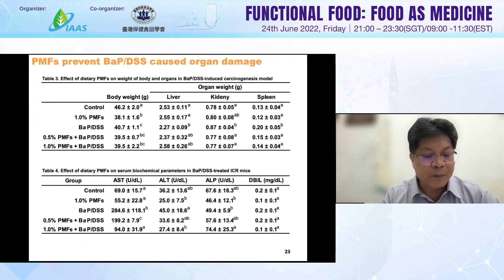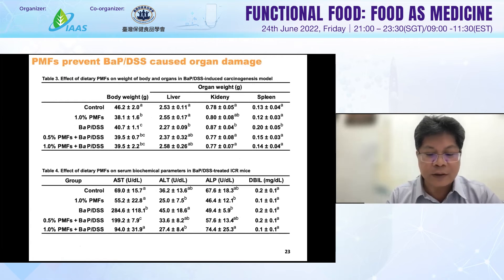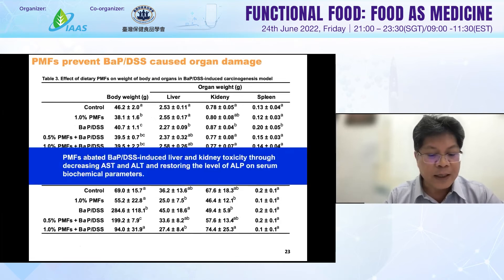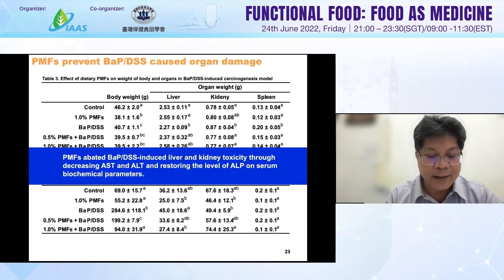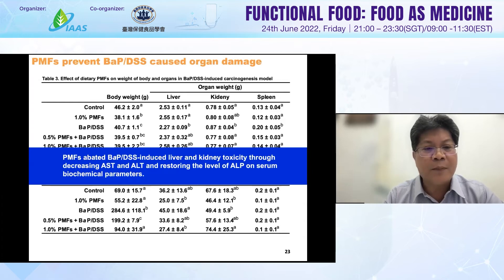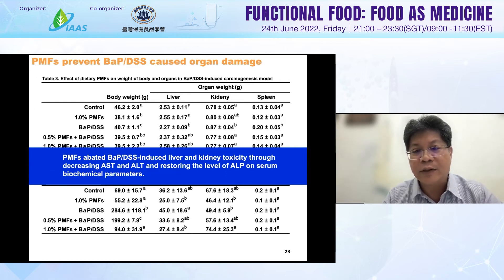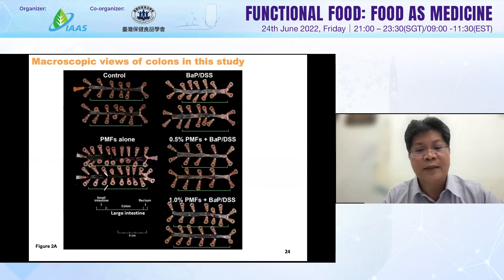PMF also attenuated the BAP-induced liver and kidney toxicity, as shown by the depression of AST and ALT levels and the restoration of biochemical parameters. Mice pre-fed with PMF were prevented from any weight change caused by BAP and DSS. PMF can attenuate the BAP-induced liver and kidney toxicity by depressing AST and ALT and restoring biochemical parameters.